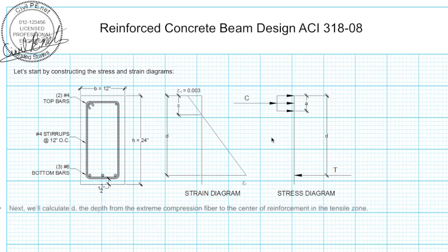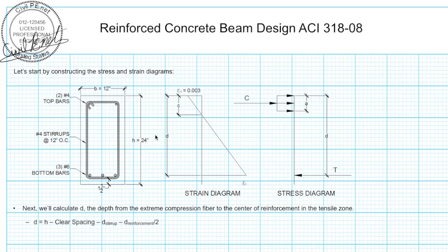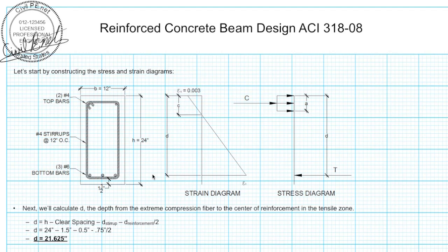Let's start by calculating d. d is the depth from our extreme compression fiber down to the center of the reinforcement in the tensile zone. It's basically the overall height of the section minus the clear cover — the distance from the outside of the concrete beam to the outside edge of the stirrup — minus the diameter of that stirrup, minus the diameter of the reinforcement divided by two, taking us to the center of that steel. Doing the calculation, we get a depth d of 21.625 inches.